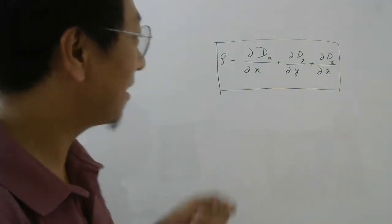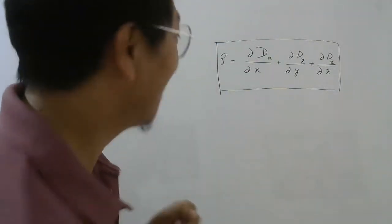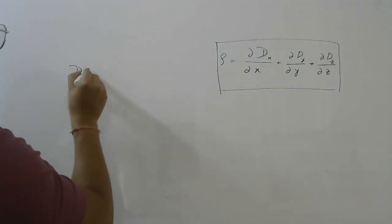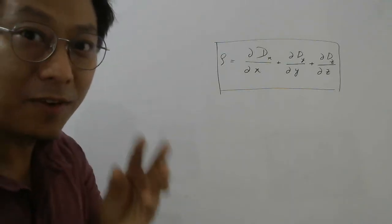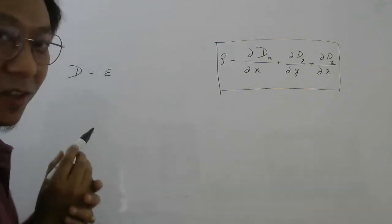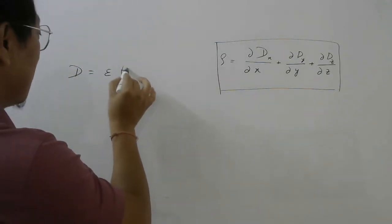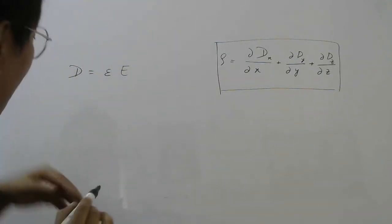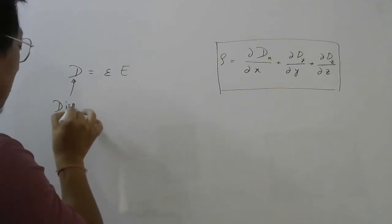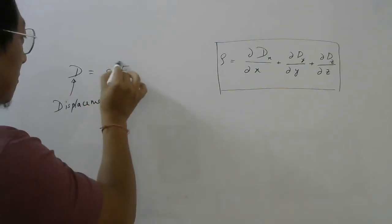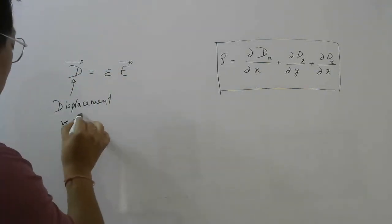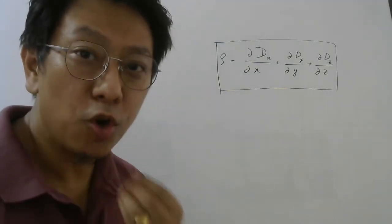Now we come to the main part of the video: how did we get this formula? Let us derive it. First, what is this D? They call it electric flux density; its definition is D = permittivity of the medium × electric field E. In higher classes you will also learn that this is called the displacement vector, since electric field is a vector, so D is also a vector quantity.